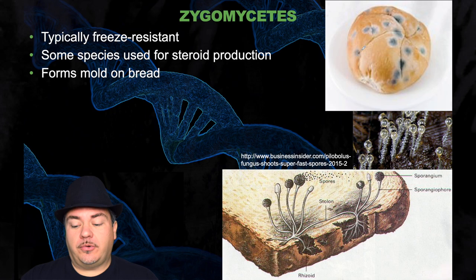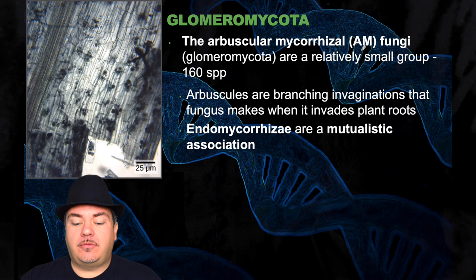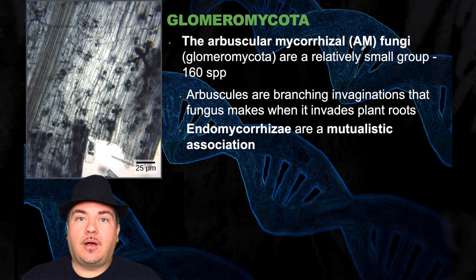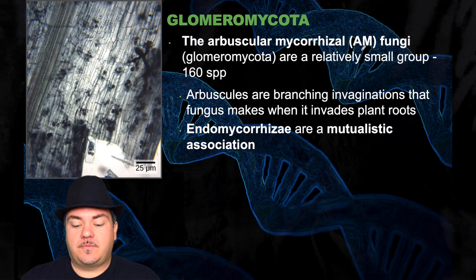The arbuscular mycorrhizae fungi, also known as glomeromyceta, are a relatively small group — there are only 160 species. Arbuscules are branching invaginations that the fungus makes when it invades plant roots. Endomycorrhizae are a mutualistic association.